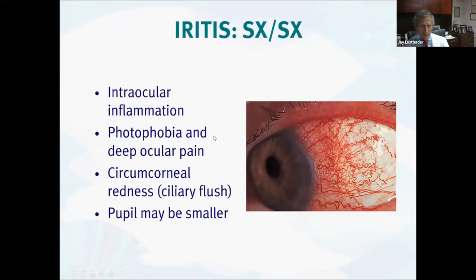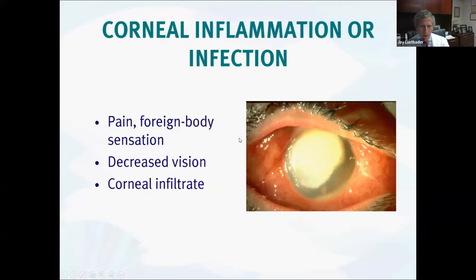Iritis presents with photophobia and a deep kind of pain in the eye — these patients really are in pain. Classically you can see this so-called ciliary flush, a deep injection around the corneal limbus. Sometimes the pupil will be smaller because of scarring around its edge. Corneal infections: this is a patient with a severe pseudomonas corneal ulcer. The key thing is to look for the infiltrate in the cornea — you can often see this with just a penlight. If you have fluorescein dye and a blue light, these will always light up with fluorescein.